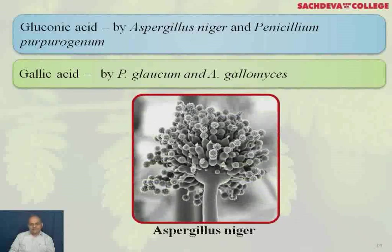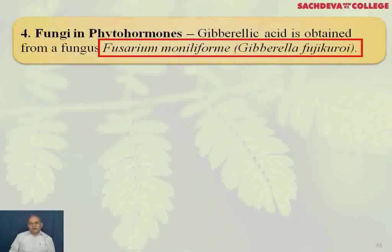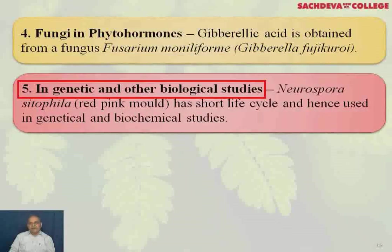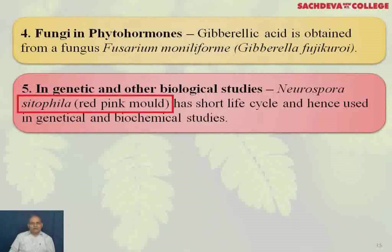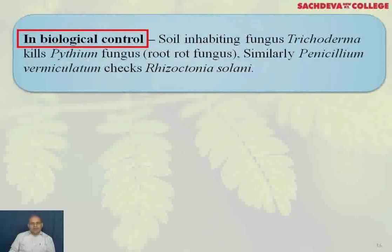This is Aspergillus niger. Gibberellic acid, a phytohormone, is obtained from the fungus Fusarium moniliforme or Gibberella fujikuroi. In genetic and other biological studies, Neurospora crassa, which is called red bread mould, has a short life span and is used in genetic and biochemical studies.